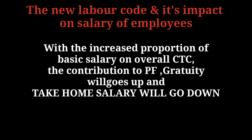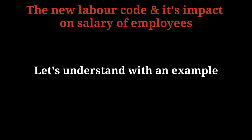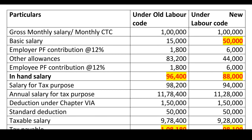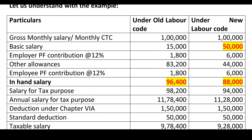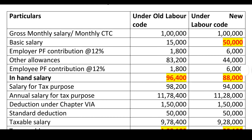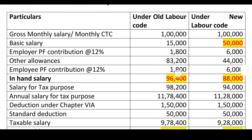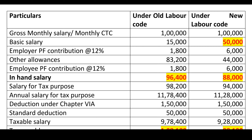Therefore, the employee's take-home salary will be going down significantly due to increased contribution by both employer and employee to the PF account. Let's understand this with an example comparing the new labor code versus the old labor code. For example, your monthly CTC is 1 lakh. Under the current/old labor code, the basic salary is 15,000. PF contribution at 12% is 15,000 × 12% = 1,800. All other allowances — HRA, special allowance, etc. — total 83,200.